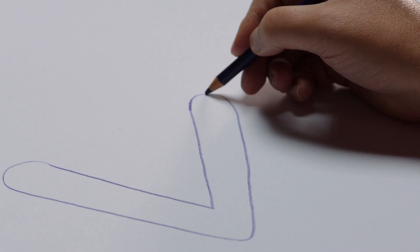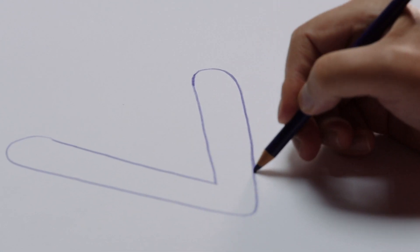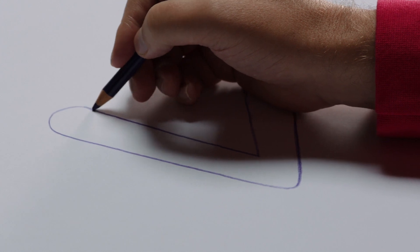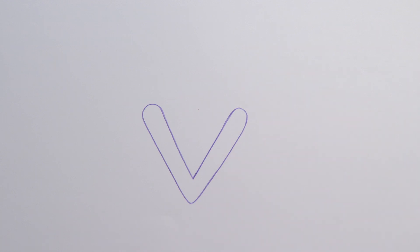Now, go over the whole V again to make the lines stronger and clearer. Look at that. One very, very cool V.